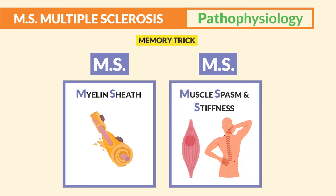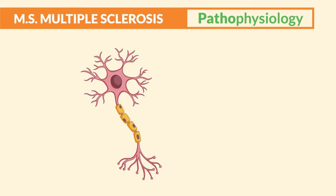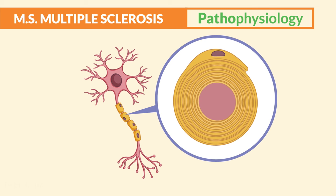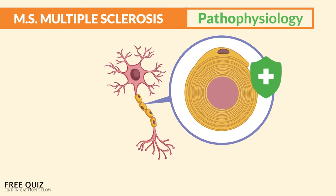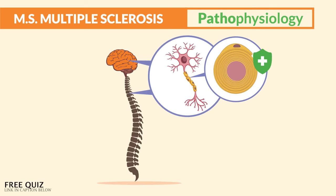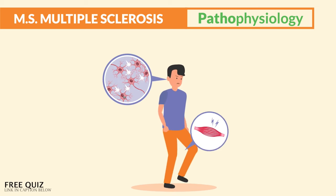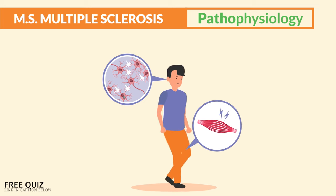We get M.S. — muscle spasms and stiffness. The myelin sheath, which I call muscle sheets, are the protective coverings around the nerve cells in the central nervous system — the brain and spinal cord — which helps the body move by sending electrical impulses from the brain to the rest of the body.